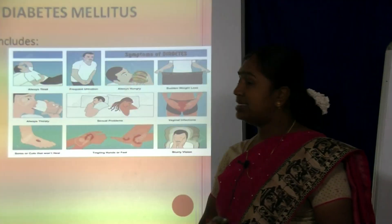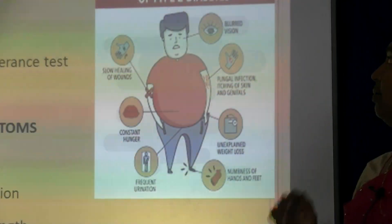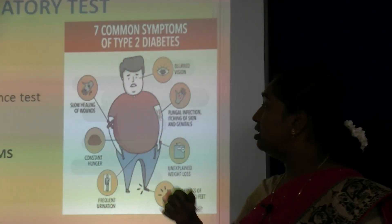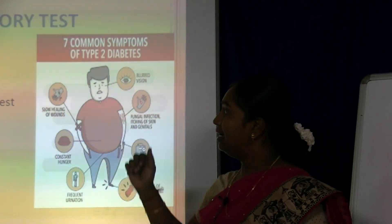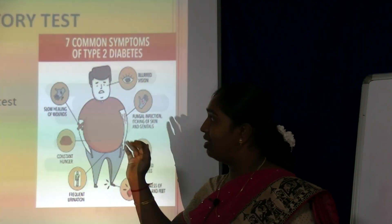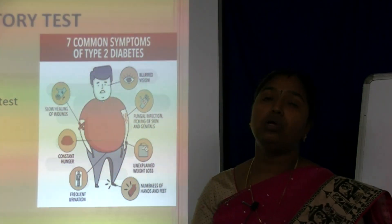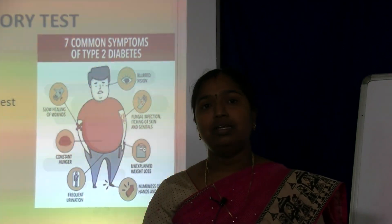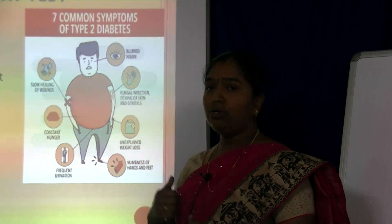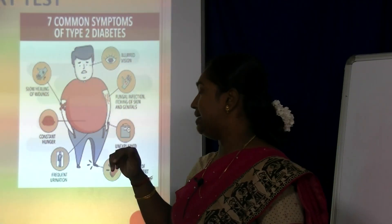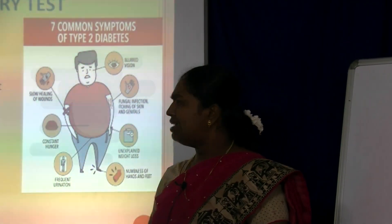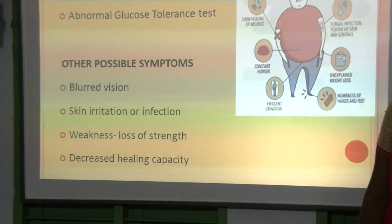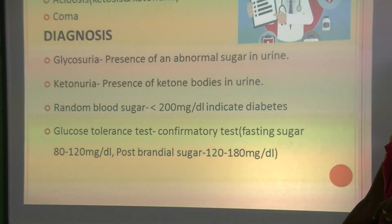The classical clinical laboratory tests help identify diabetic patients. The first test is glycosuria — glucose present abnormally in the urine. Hyperglycemia — elevated blood sugar — is seen without insulin. Abnormal glucose tolerance test is also observed. Other possible symptoms include blurred vision, skin irritation, infection, weakness, and decreased healing capacity.